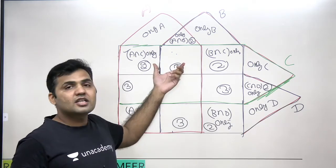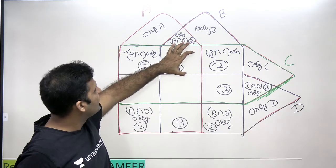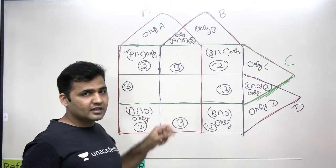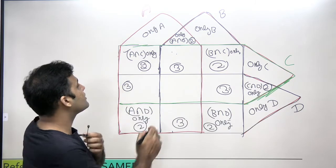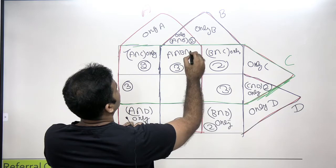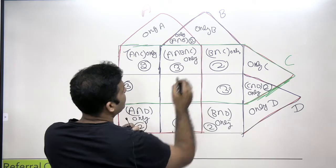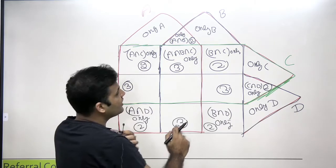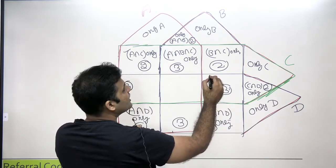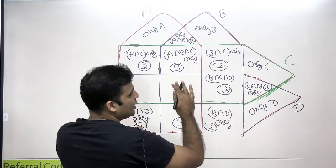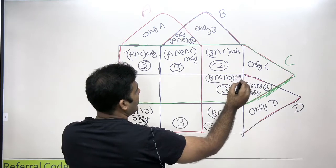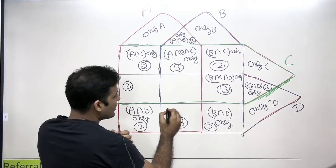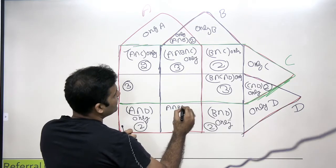To identify which three sets a cell belongs to, look at which colored areas cover it. This particular cell is covered by the red area (A), the blue area (B), and the green area (C), so it is A intersection B intersection C only. This other cell is not covered by the red region, so it belongs to B intersection C intersection D. And this cell is not covered by the green area, so it belongs to A intersection B intersection D only.